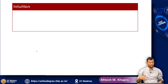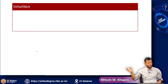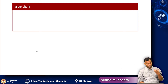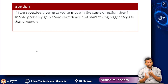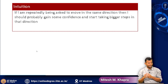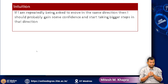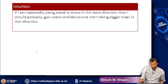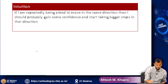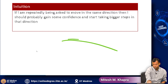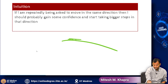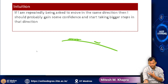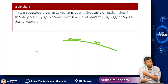You walk a few more steps, ask again, and that person again points you in the same direction. Your confidence increases and you gain more momentum. What we are saying is: if you are repeatedly being asked to go in the same direction, you should probably gain confidence and start taking bigger steps in that direction. At this step the gradient may be small because you are on a gentle surface, but you have been moving in this direction for a long time. What if you accumulate all this and start moving very fast so you can come out of this gentle region quickly?